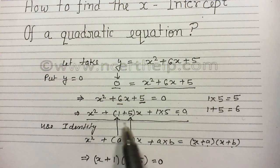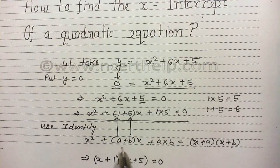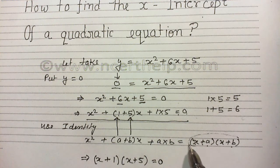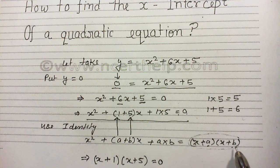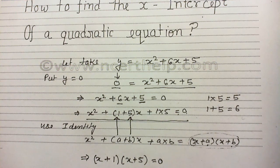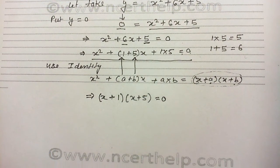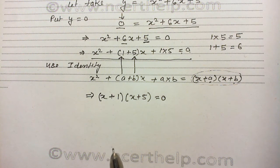I have solved this expression using this identity and I get this value. Here, x is equal to 1, oh sorry, a is equal to 1 and b is equal to 5. Now we can solve it further to get the value of x which is the x-intercept.